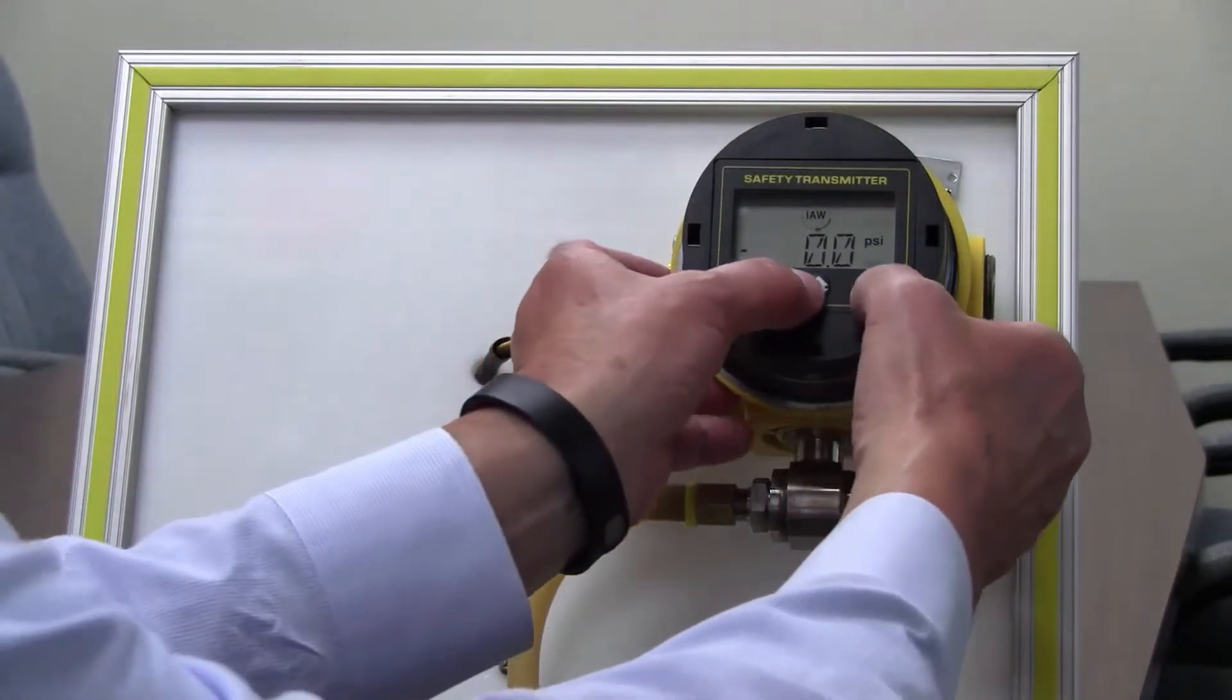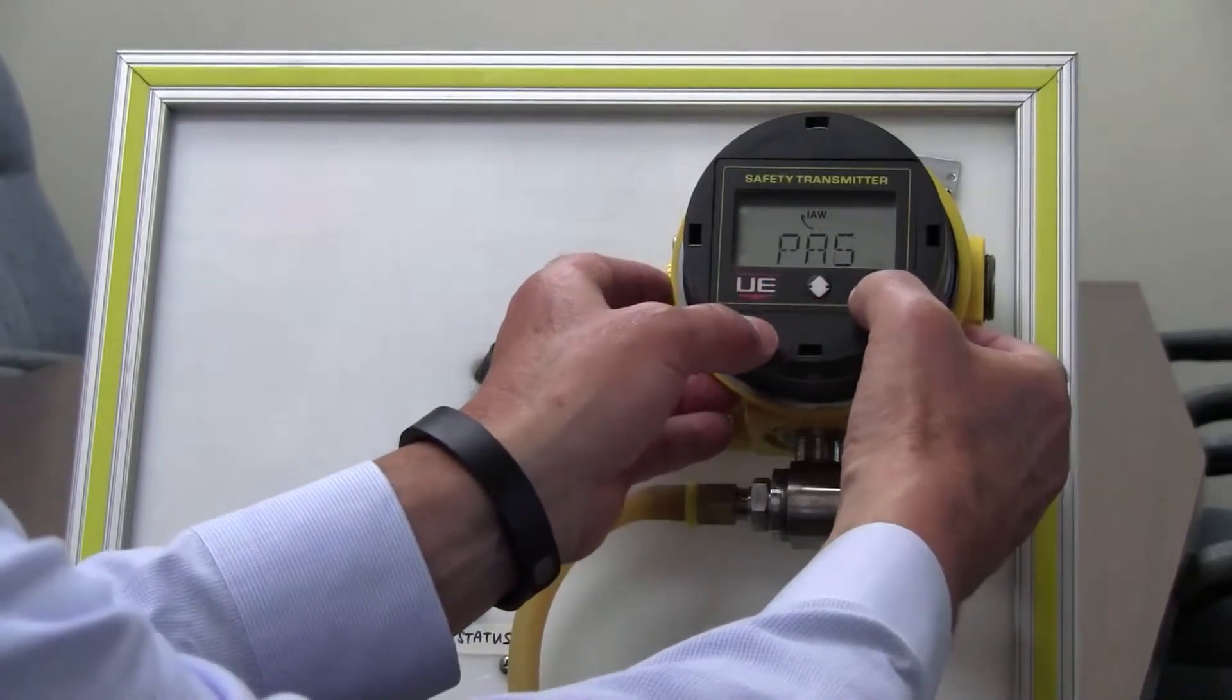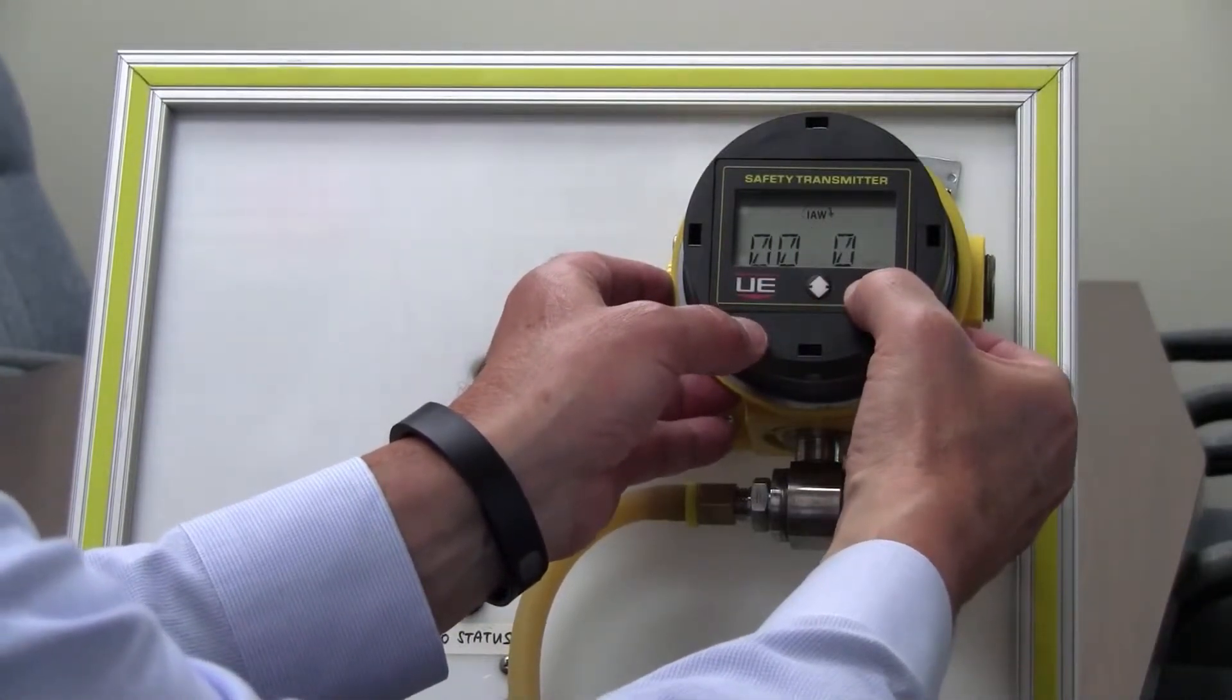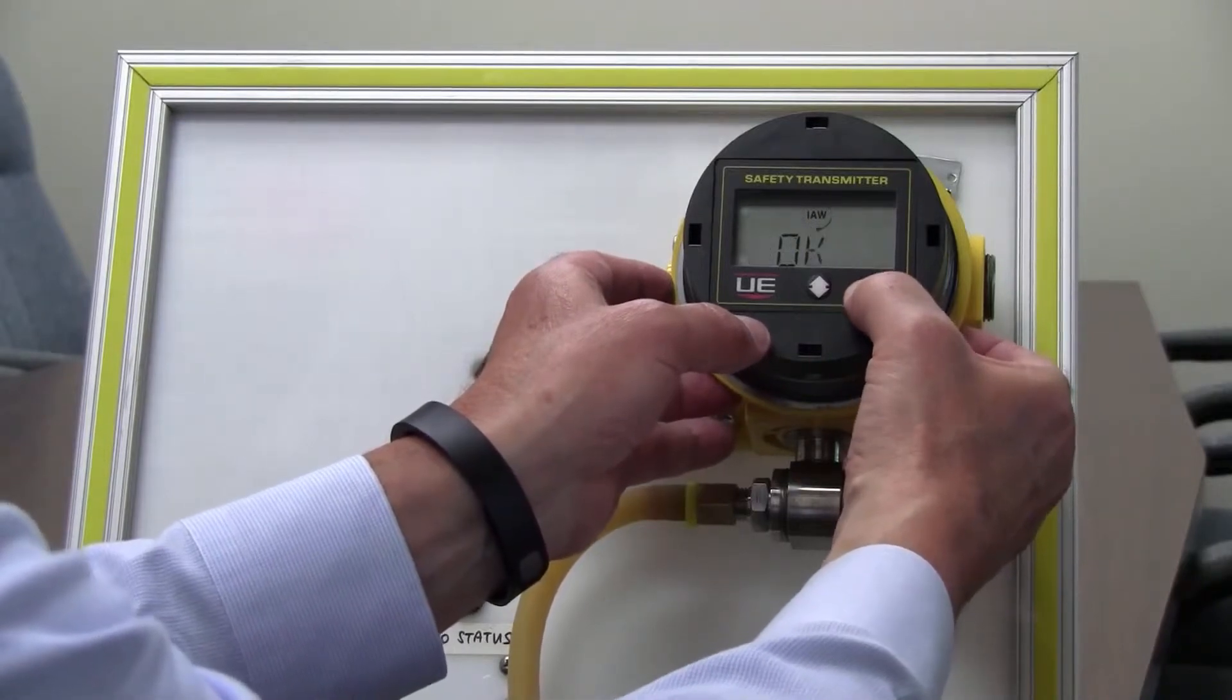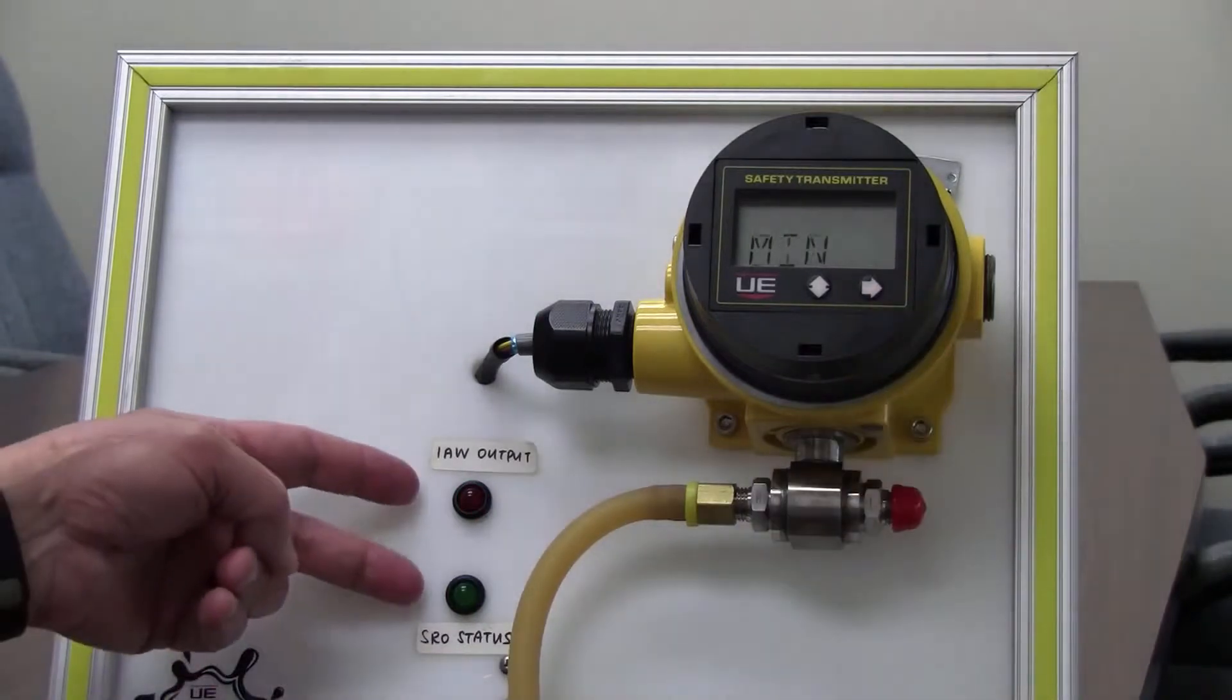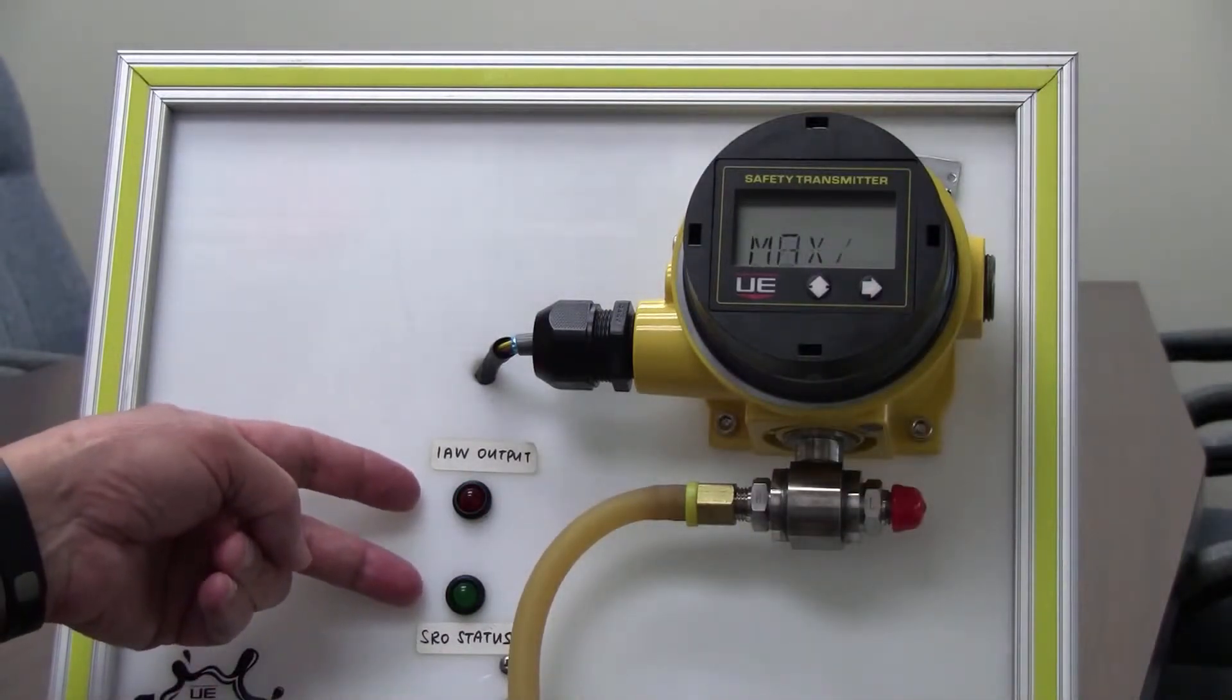Let me go ahead and enter the password. Two buttons. Password defaults at all zeros unless you change it to something otherwise. And once that's accepted and I press the right hand button again, you'll notice that the product has gone offline at this point.